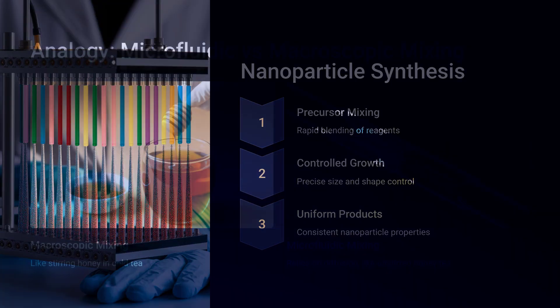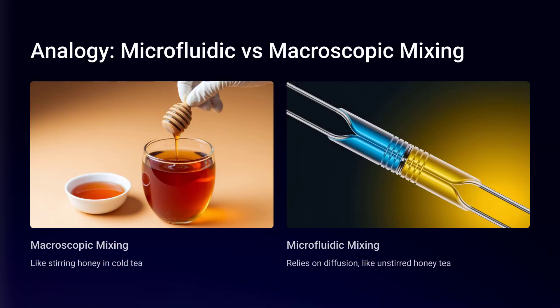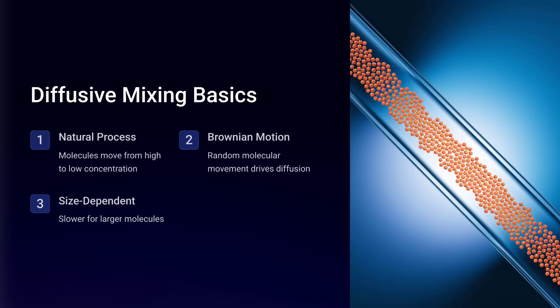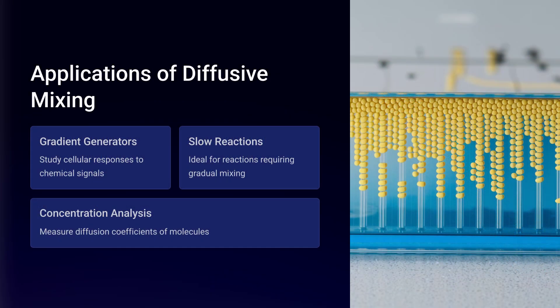Herringbone structures, microscopic ridges on the channel walls, create chaotic flows, helping molecules diffuse faster.